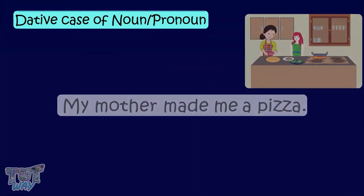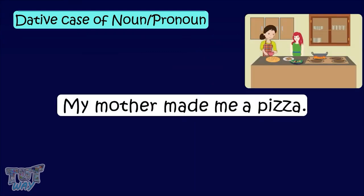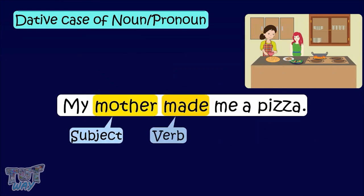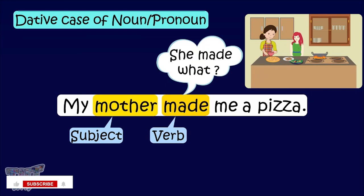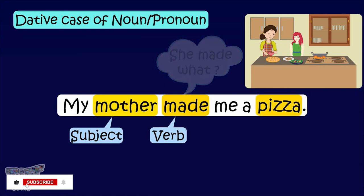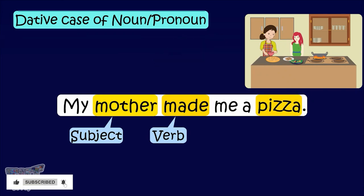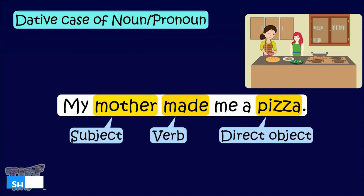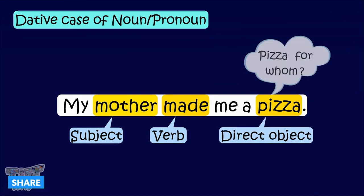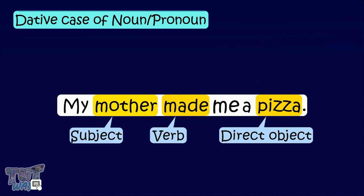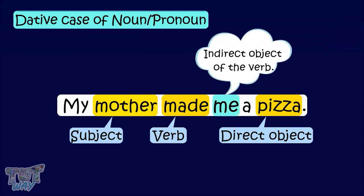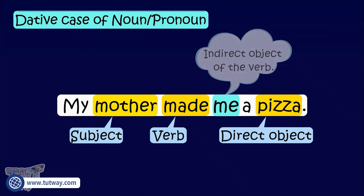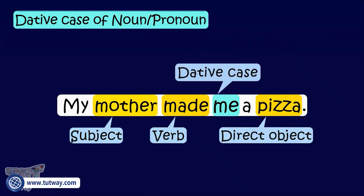Here we have more examples. My mother made me a pizza. 'Mother' is the subject, 'made' is the verb, and she made what? Pizza. So 'pizza' is the direct object. But mother made pizza for whom? For me. So the indirect object of the verb is 'me,' and 'me' is said to be in the dative case.